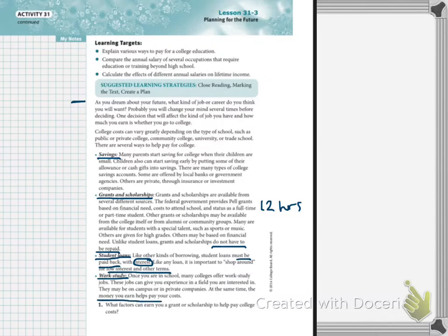At the same time, the money you earn helps you pay your costs. So if you are wanting to be an engineer, maybe you go get a work-study job at an engineering firm. So you are earning money because you're working there. However, it's not going to be a whole lot, but you can use that money towards your school.